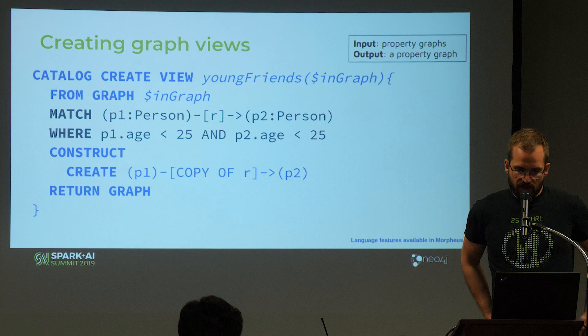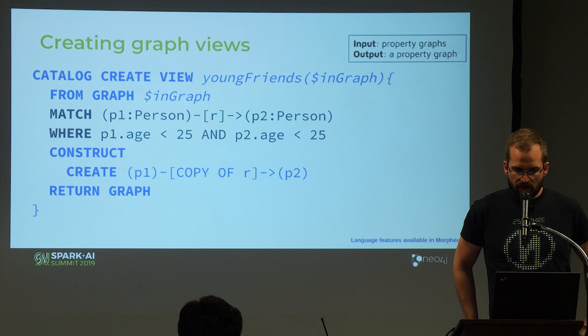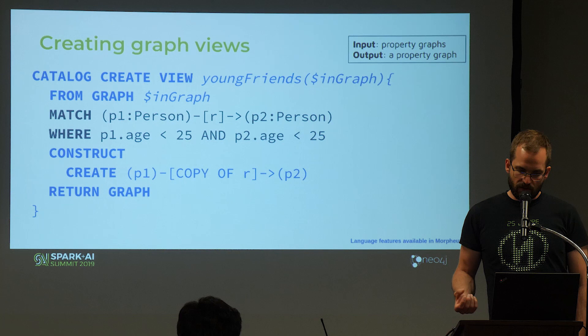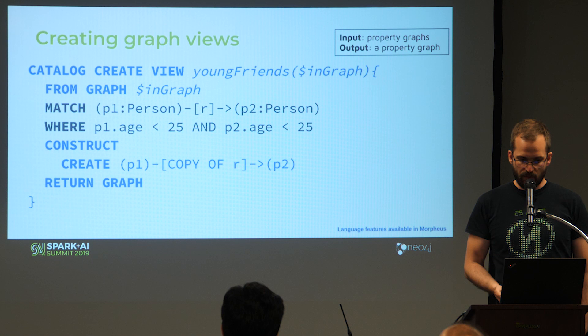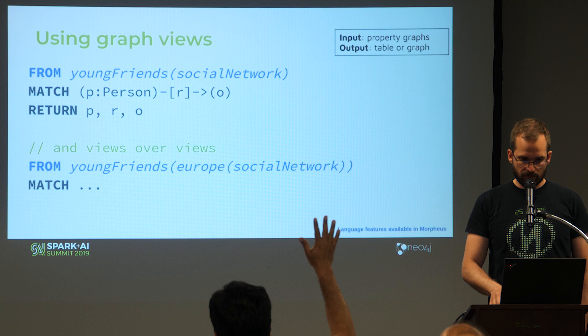With Cypher 10 and Morpheus we also introduced the concept of graph views, which is very similar to SQL views. You can store a specific query under a given name and the view takes some arguments. For example, we define a view called 'young friends' that takes a graph argument and selects persons connected to each other, both under 25 years old, then creates a graph containing only those persons.